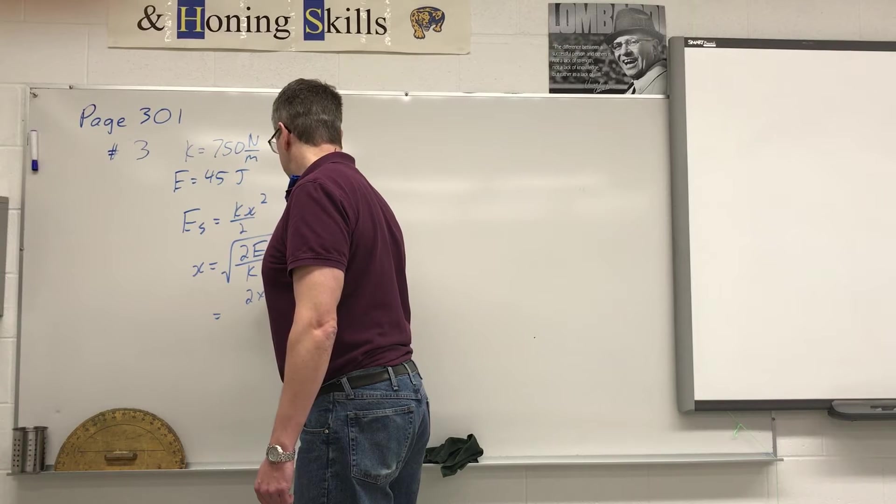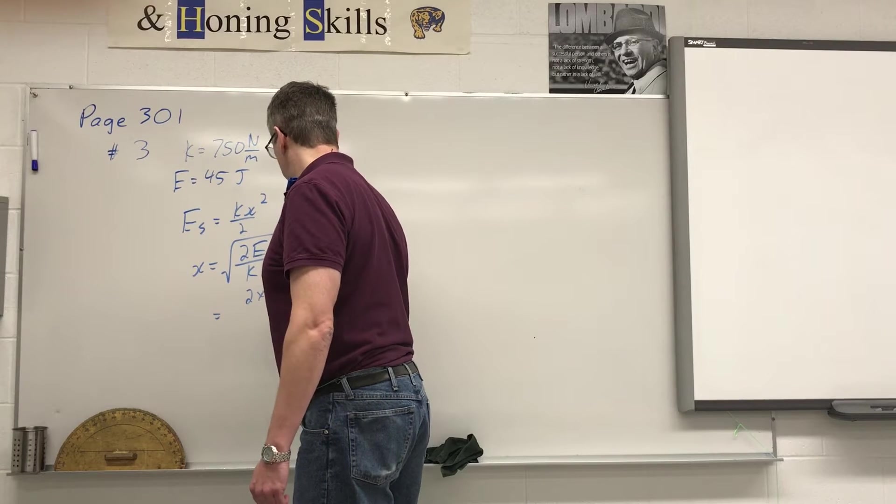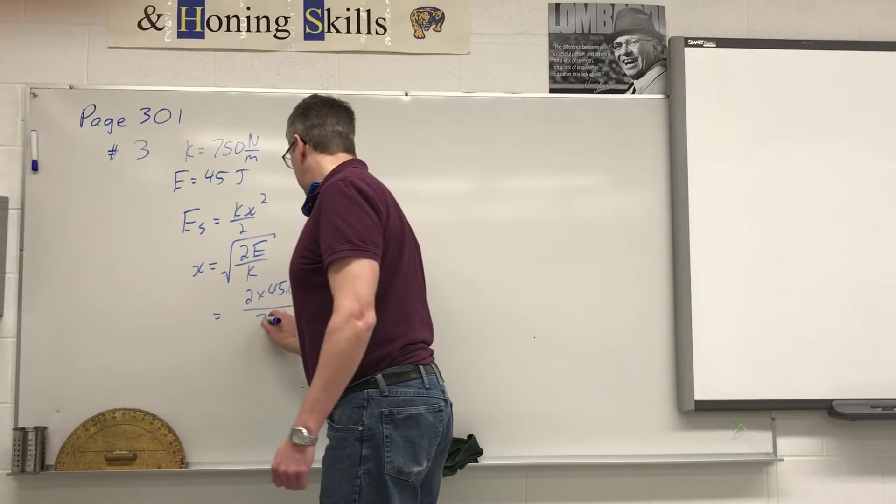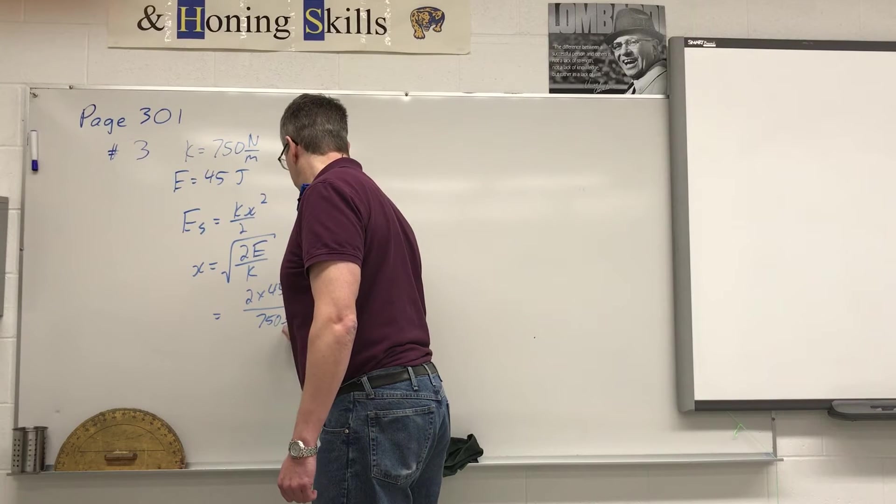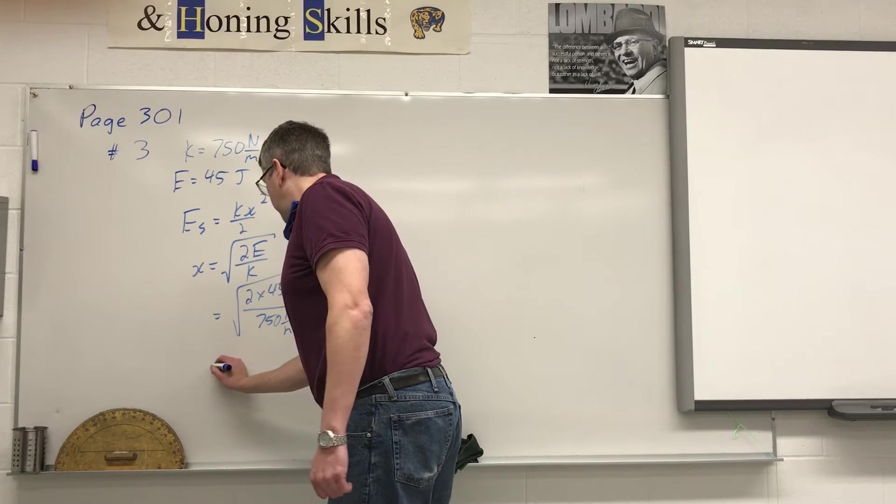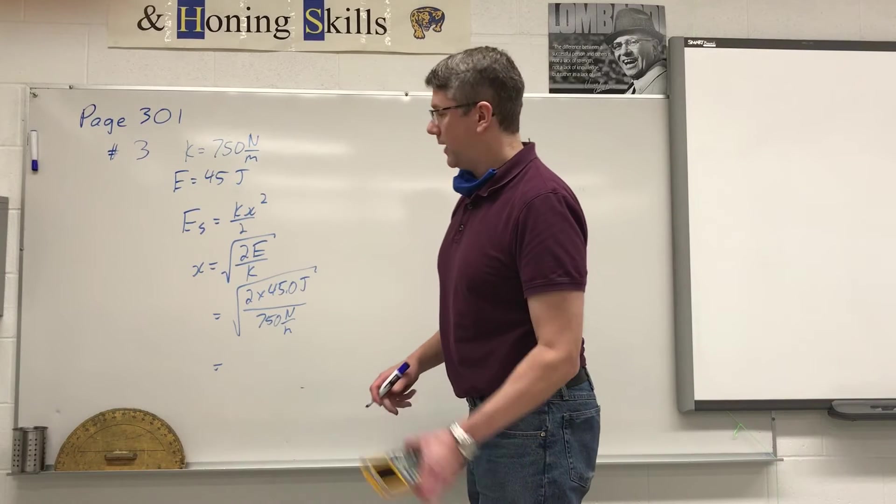So we get 2 times 45.0 joules divided by our k value, 750 newtons per meter. Square root the whole thing, and that will give us our answer.